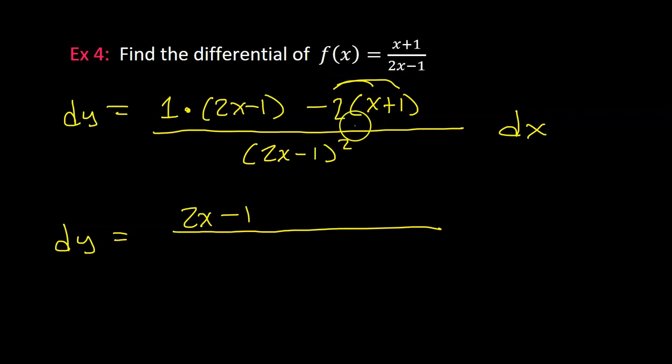Make sure you distribute a negative 2, not a positive 2. So we will get negative 2x minus 2, all right? The negative goes with it. All over 2x minus 1 squared.